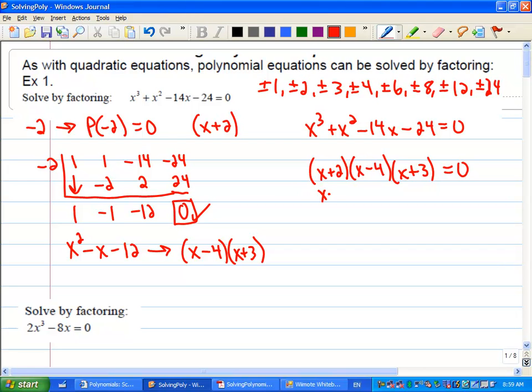It's the same thing as writing this as x plus 2 times x minus 4 times x plus 3 equals 0. Looking at these factors here, if I want to make this equal to 0, all I have to do is make one of the factors equal to 0, and 0 times any other number gives me a 0. So the solutions are x equals negative 2, x equals 4, and x equals negative 3. Make sure you actually state the answers. Don't leave it factored. Make sure you actually write the solutions out.